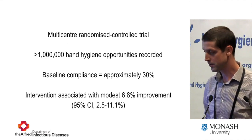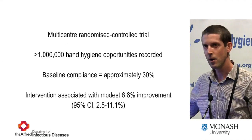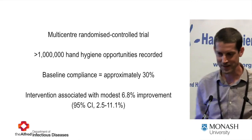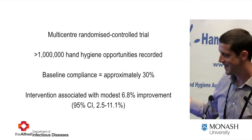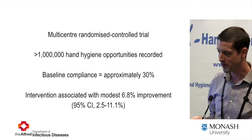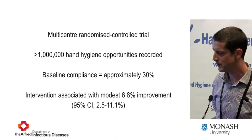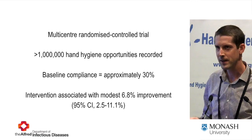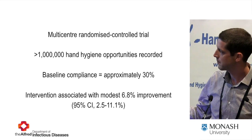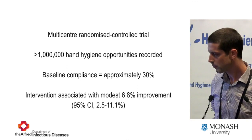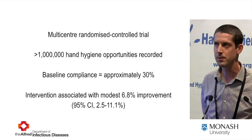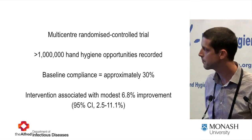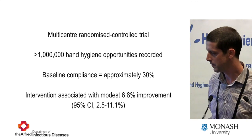This was in fact a randomized controlled trial and they recorded over a million hand hygiene opportunities — you could quickly beat Hand Hygiene Australia's database numbers. But the quality might not be quite as good. Their baseline compliance was 30% and the intervention improvement was modest at 7%, despite all of that. However, healthcare workers in general thought this was a useful approach — they tolerated it and didn't have particular objections to wearing the badges.